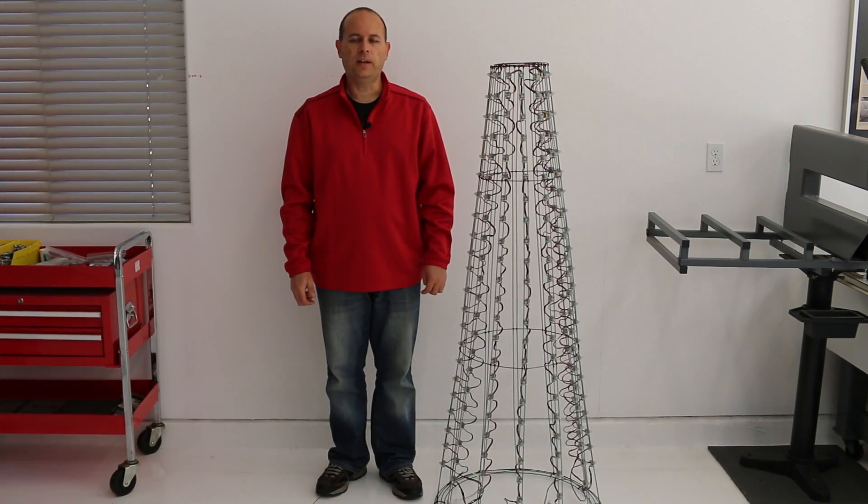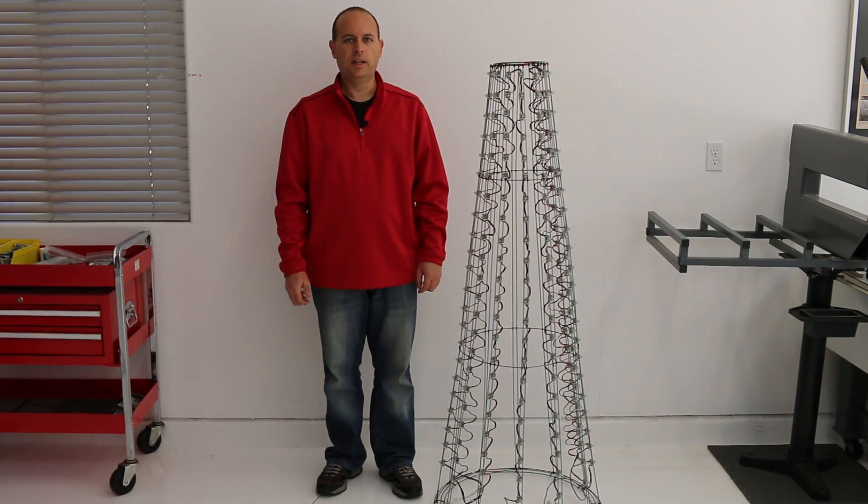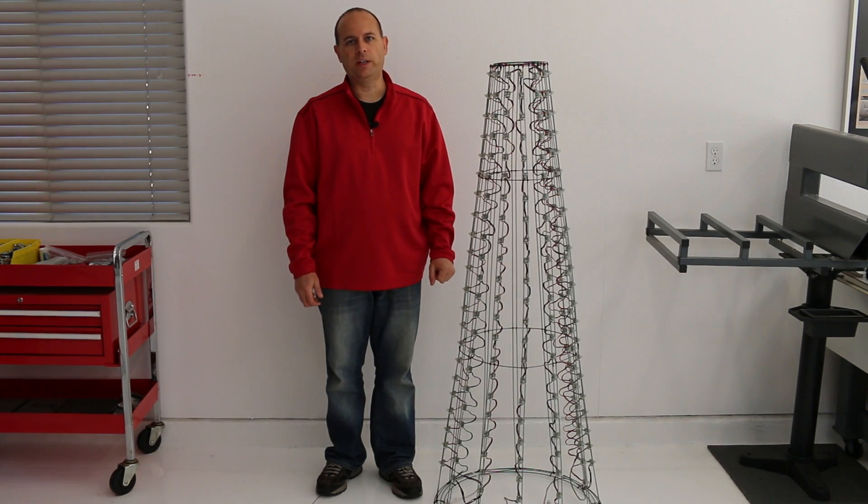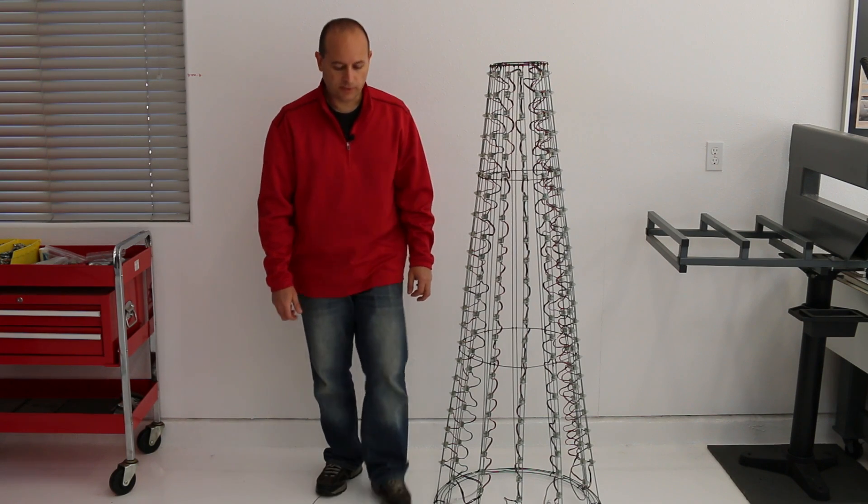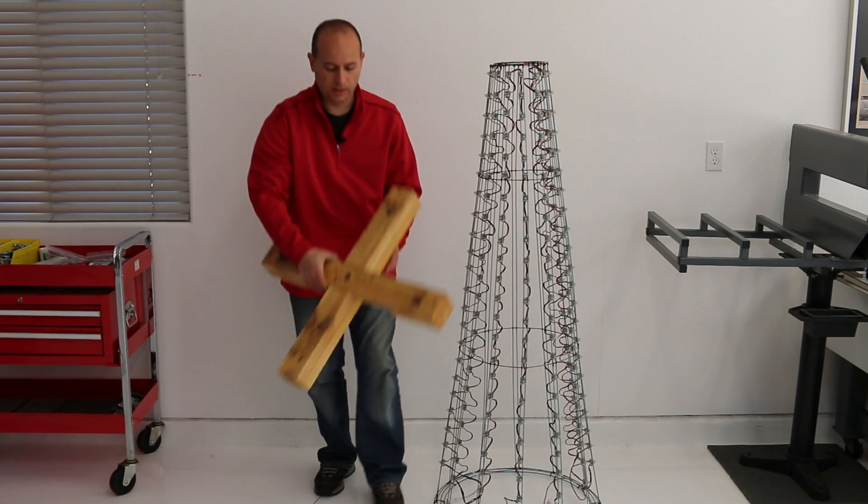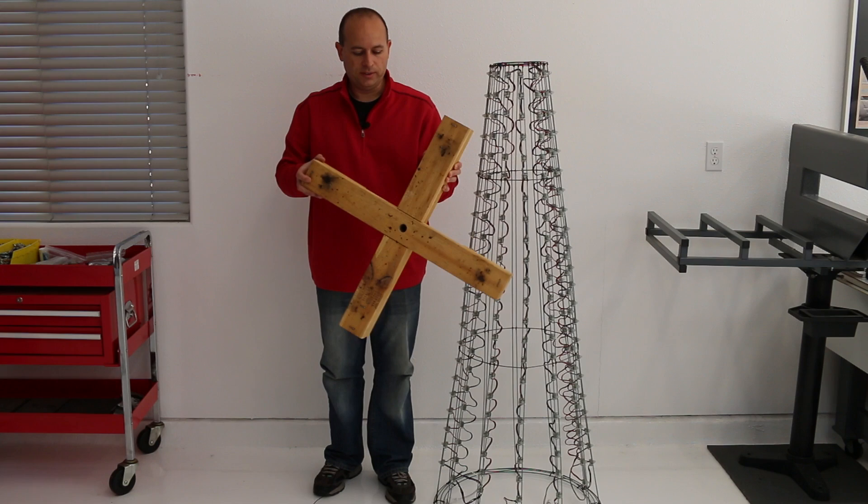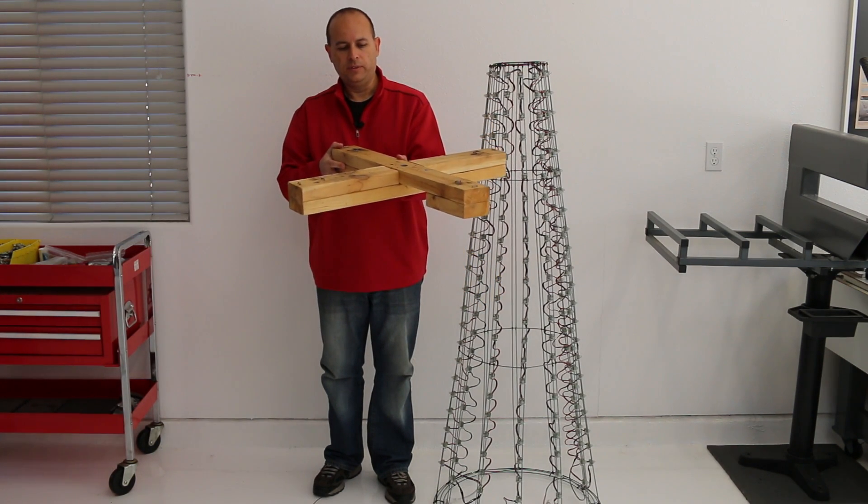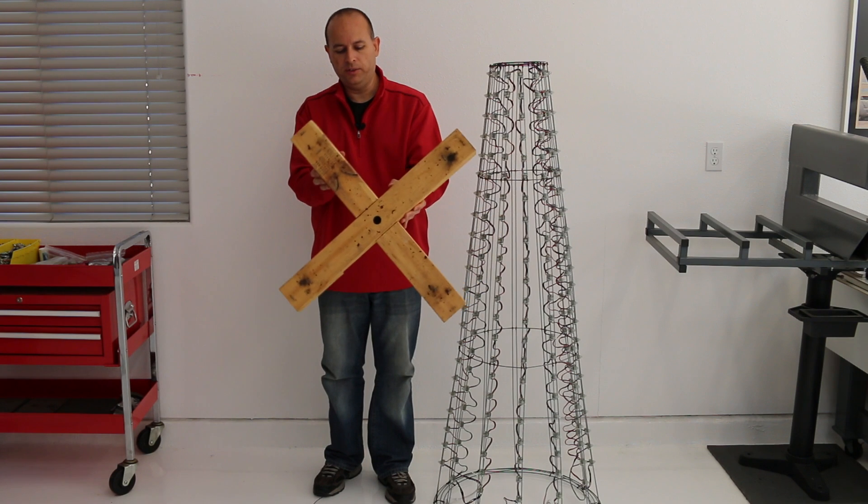In order to simplify construction of the pixel tree, I needed to create a jig that would hold both the top and bottom wireframe rings in place. To do that, I took some 2x4s and I simply created a jig base by cutting them into a cross shape.